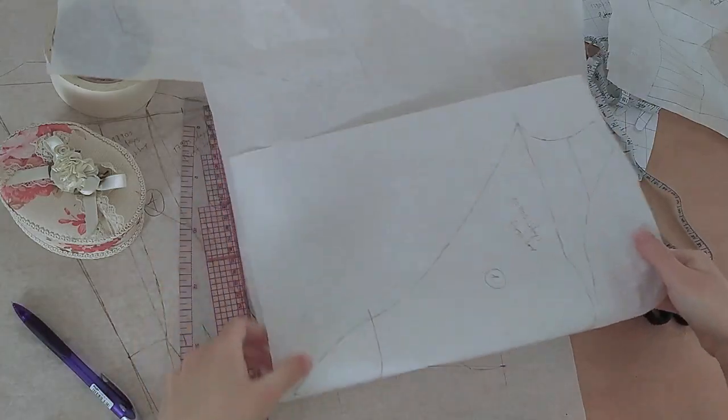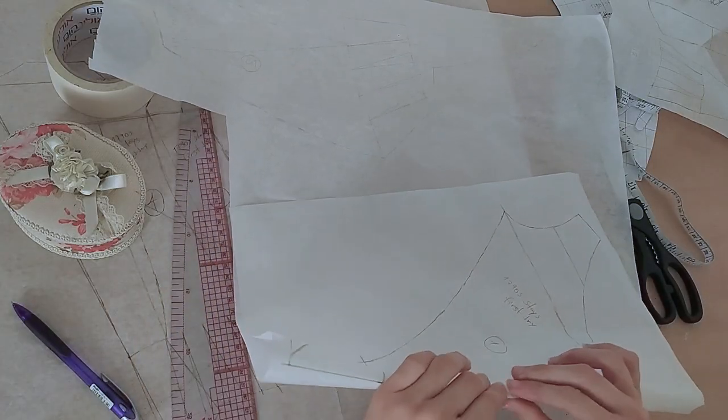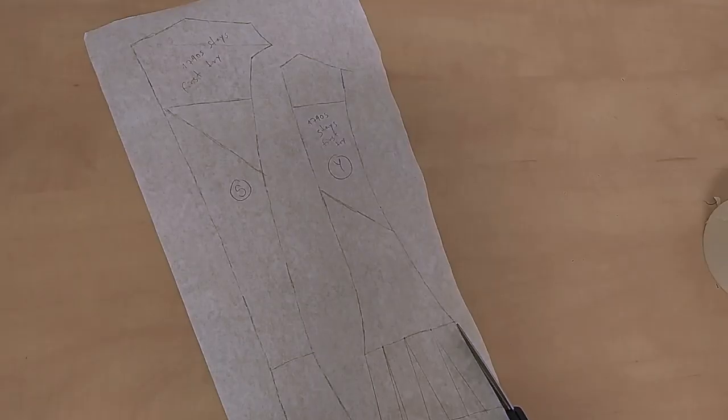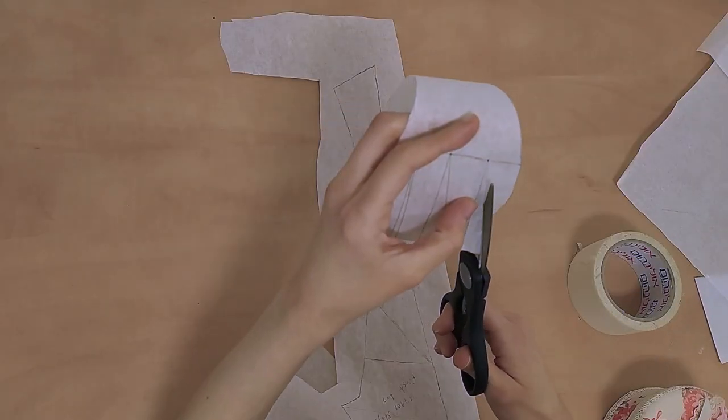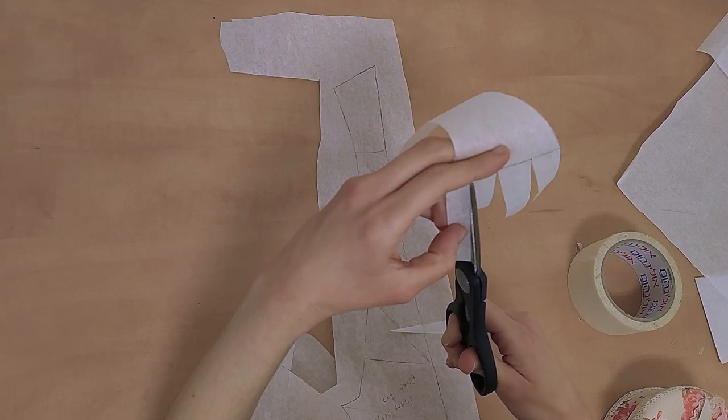I'm cutting the center front piece out on the fold, so that I'll have a whole piece, and it'll be easier to copy it out onto the cardboard. And now I'll just cut out the other pieces. And because these are not double, I don't have to cut them on the fold, and it's just much easier to just cut them out.